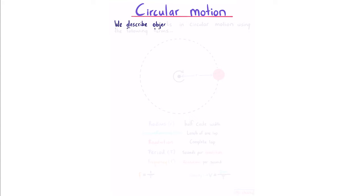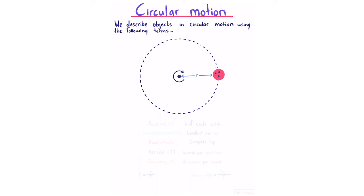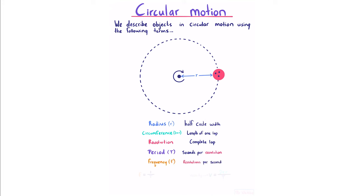Circular motion. We describe objects in circular motion using: radius r (half the circle's width); circumference 2πr (length of one lap); a revolution (a complete lap); period T (seconds per revolution); and frequency (revolutions per second). These two are reciprocals: frequency = 1/T and T = 1/frequency. The velocity of our object is distance over time, where distance for one revolution is 2πr and time for one revolution is period T.